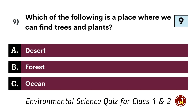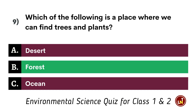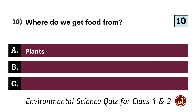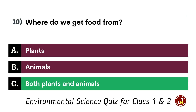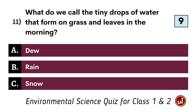Which of the following is a place where we can find trees and plants? Forest. Where do we get food from? Both plants and animals. What do we call the tiny drops of water that form on grass and leaves in the morning? Dew.